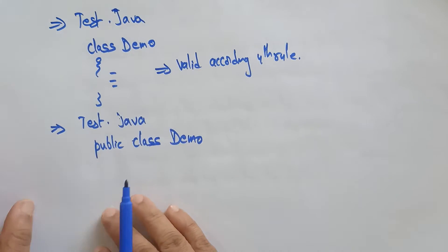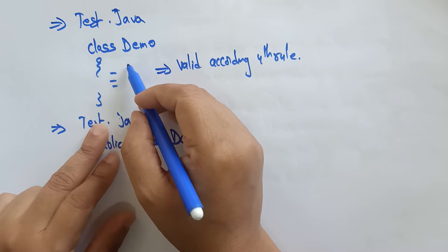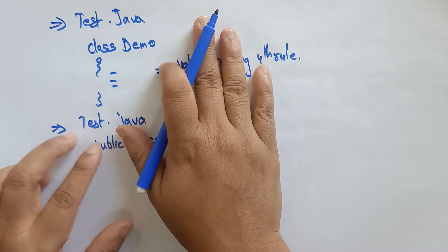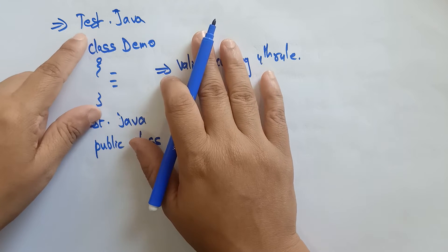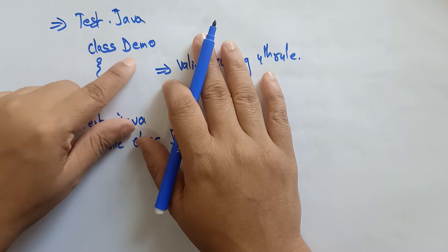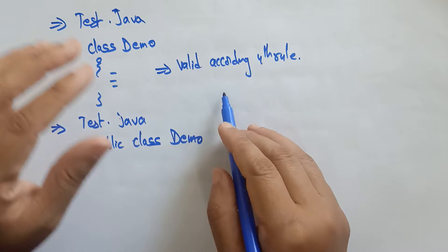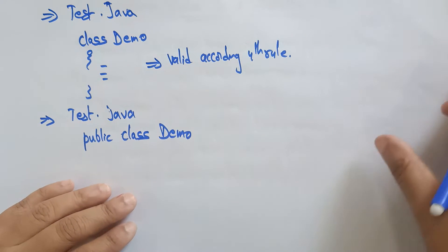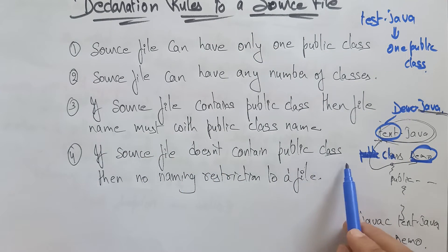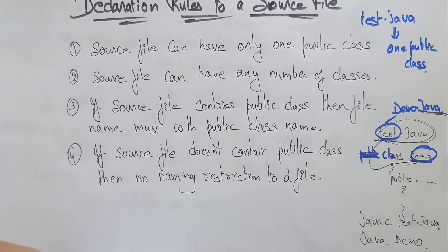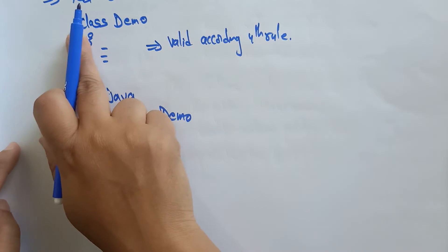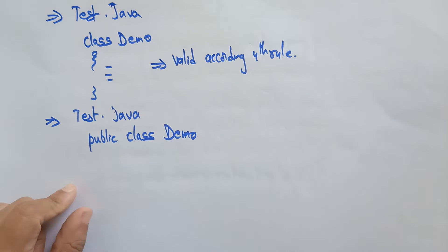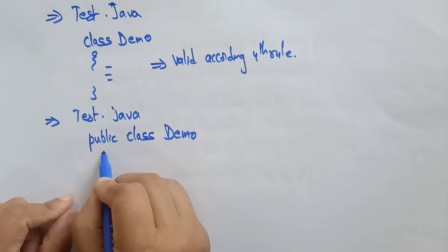Let me show you an example: test.java with class demo. Is there any error? No, it's valid. My source file is 'test' and my class name is 'demo' — two different names, no problem. This is valid according to the fourth rule: if a source file does not contain a public class, there is no naming restriction. There is no public here, so no naming restriction.